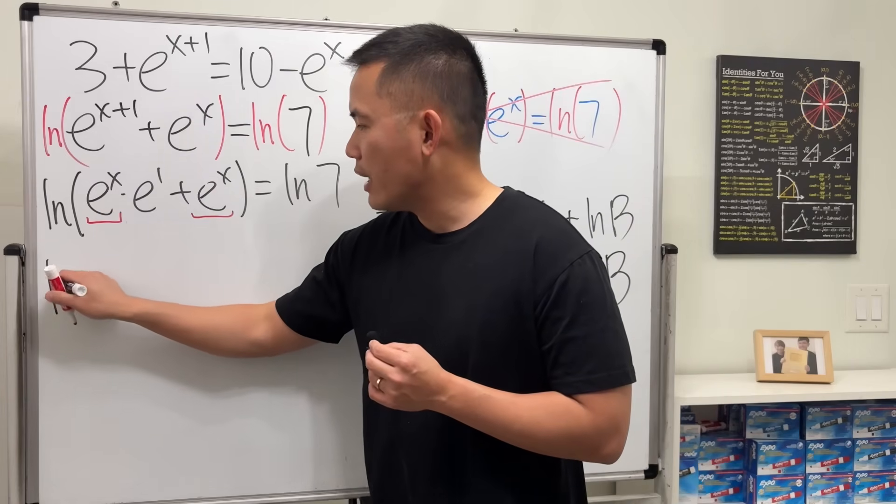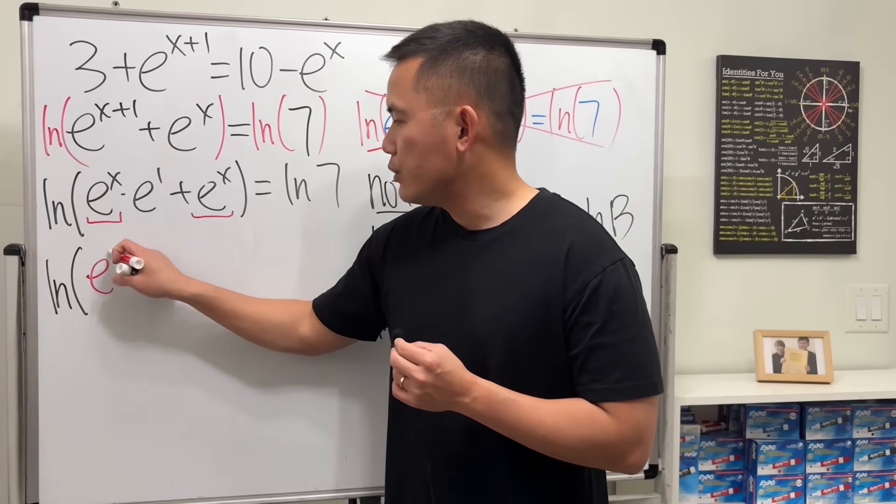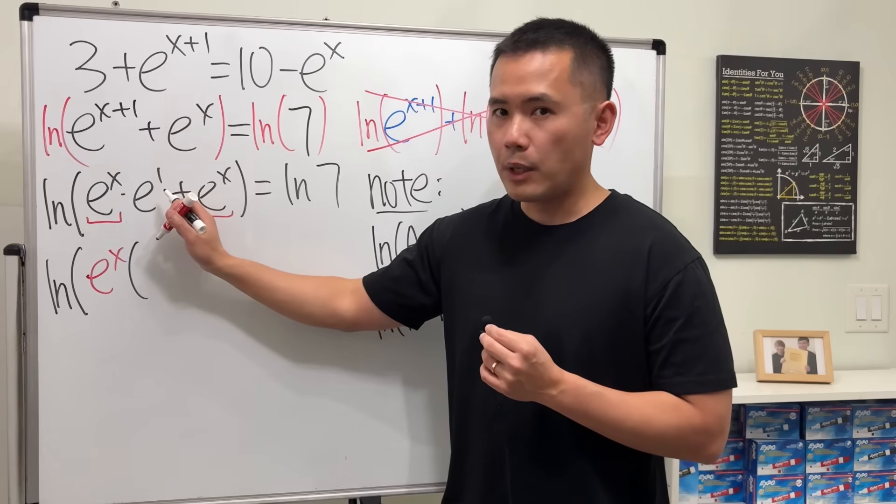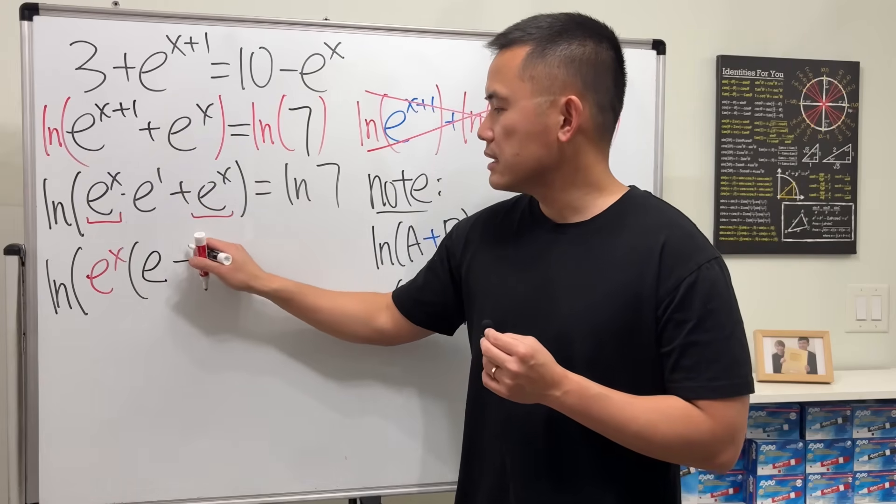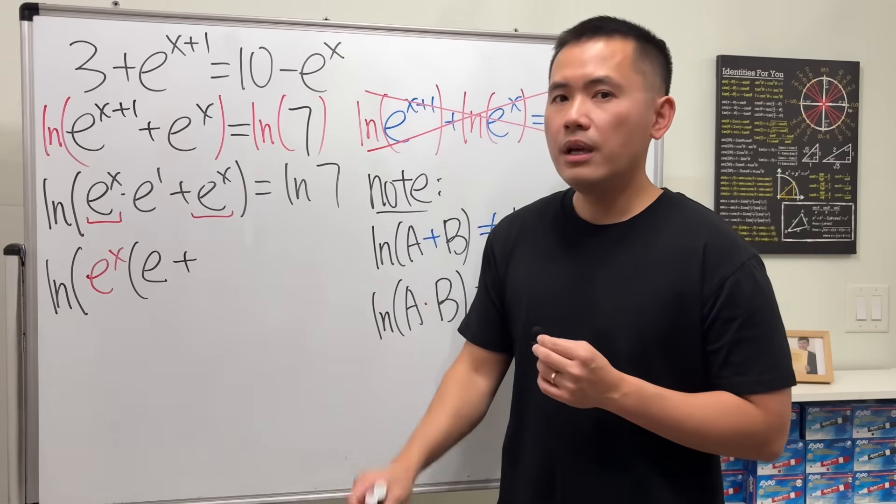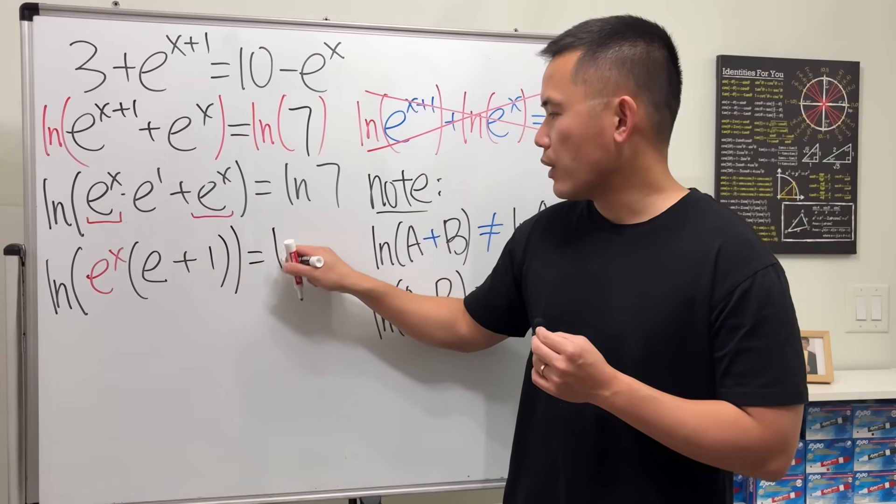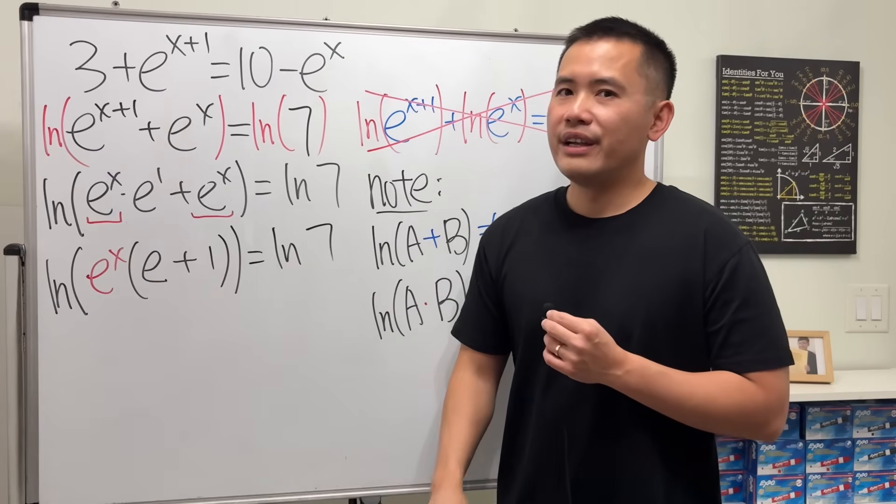Then we see we have e^x, e^x. We can factor that out. So we have ln(e^x × (e^1 + 1)) = ln(7). From the first term, we have e to the first power left, which is just e, plus we took out e^x already, but make sure you still have the 1.